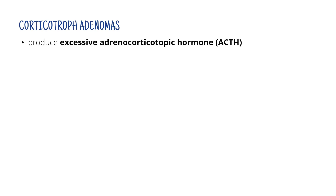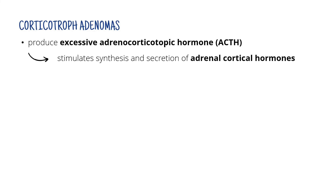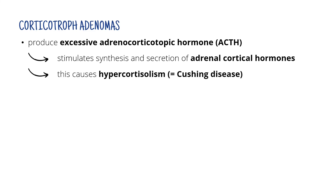Finally, we have corticotroph adenomas that produce excessive adrenocorticotropic hormone. Adrenocorticotropic hormone stimulates the synthesis and secretion of adrenal cortical hormones, most importantly cortisol. So if there's a tumor, there's too much ACTH, there's too much cortisol, and we get hypercortisolism — also known as Cushing disease. Cushing syndrome and Cushing disease are very popular topics and deserve a separate video, but we'll cover at least some of the effects of too much cortisol.